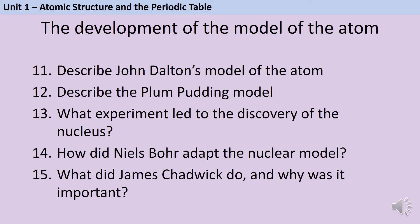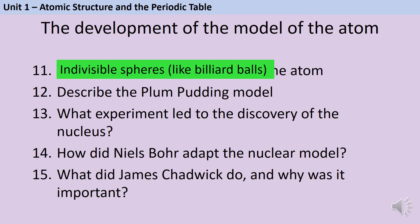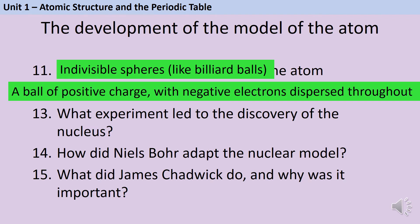British chemist John Dalton described atoms as indivisible spheres and compared them to billiard balls. J.J. Thomson's plum pudding model described the atom as a ball of positive charge with negative electrons spread throughout it, like the plums in a plum pudding.